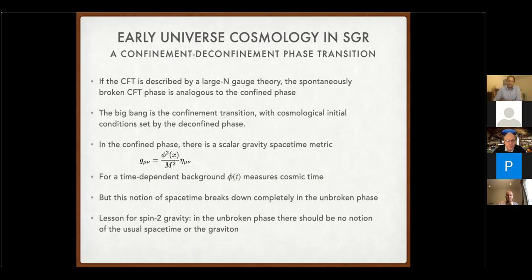There's further clarification about the terminology. Confinement for the questioner is a phenomenon of explicit breaking of conformal invariance, whereas here we're talking about spontaneous breaking, which is a feature of the theory having a flat direction. At the origin of this flat direction the theory is conformal — there is no dilaton — and if you go along this valley the energy doesn't change. This is where spontaneous breaking happens and you get a Goldstone boson, just like the Mexican hat potential.